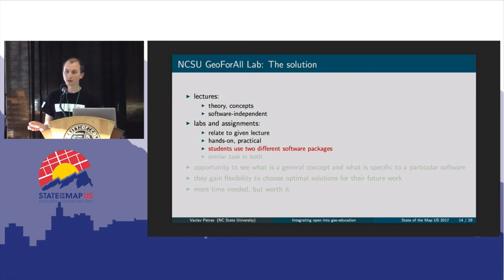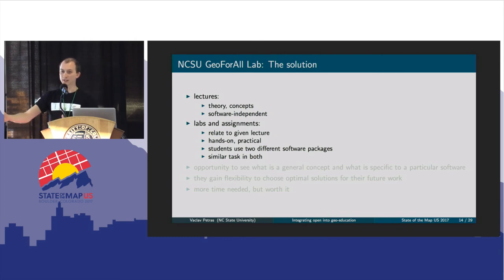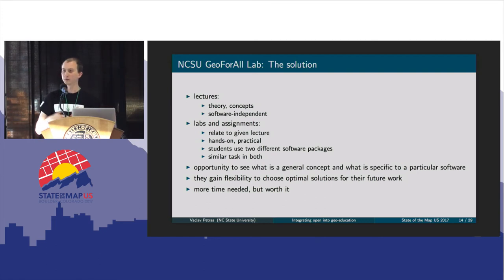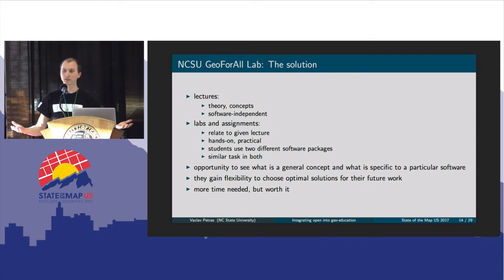How we address this problem is that we require students to actually use two different software packages. If they would use one — open source or proprietary — they would be tied to just that one. We give them two different software packages to work on for their assignments. The hope is that they will generalize the concept they find in one software using another software, generalize this on a higher level, and connect it to what they learned from the lectures. We hope this gives them the opportunity to actually choose in the future, and we know from feedback that students who have left us have this flexibility.